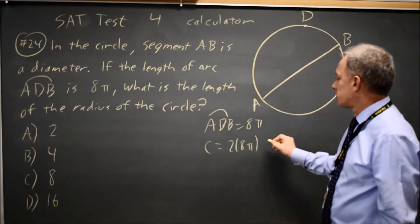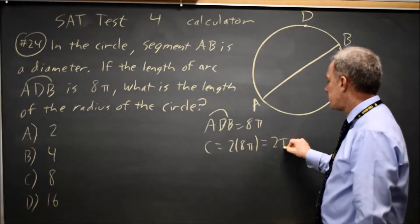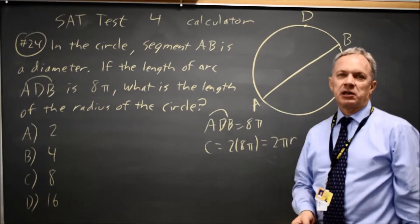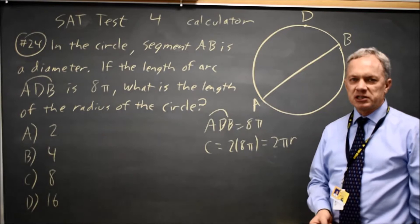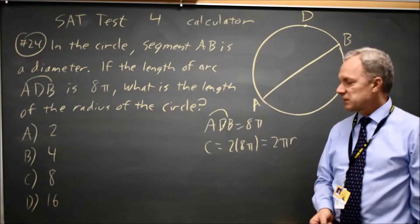What we also know is the circumference is 2 pi times the radius, and if you're unsure of that formula, it is listed at the start of each math section.